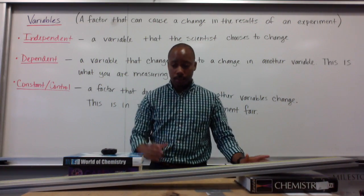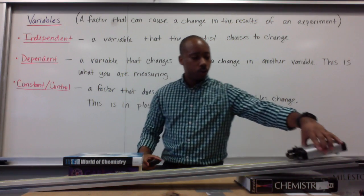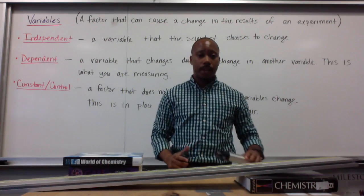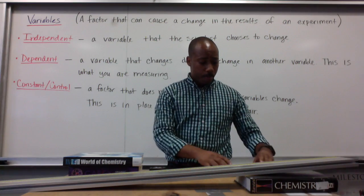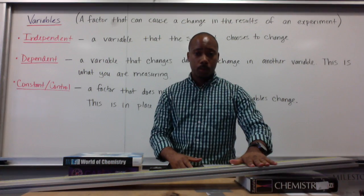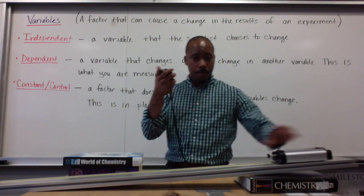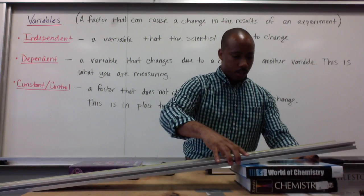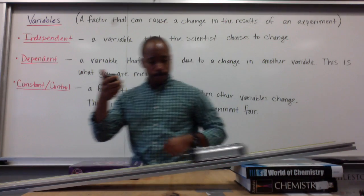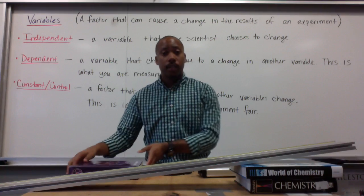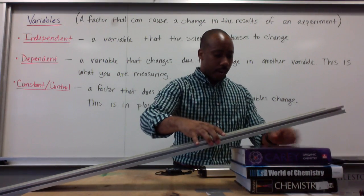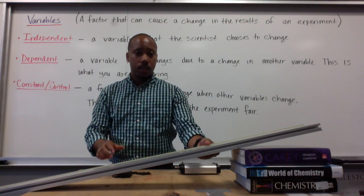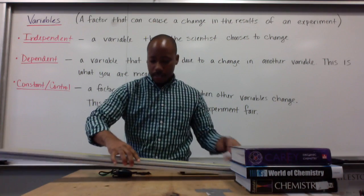Here's an example experiment measuring the velocity, or the time it takes a cart to roll down a ramp. I'm going to see how the velocity of this cart is affected by the height of my incline. With one book, I measure my time. Then I increase the height — I'm changing the height of the ramp — and I measure again. I have a different time; it went faster. I increase the height of the ramp again, and it went much faster — the ramp even moved. So in this experiment, I can outline some of my variables.